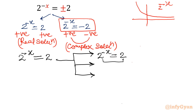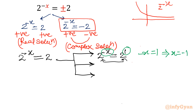Since the base is the same, the exponents must be equal. Since 2 means 2 raised to the power 1, we write minus x equal to 1, which gives x equal to negative 1.